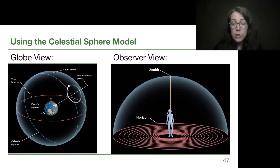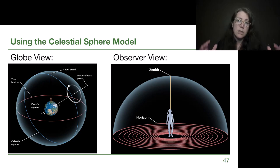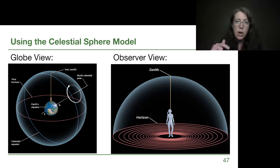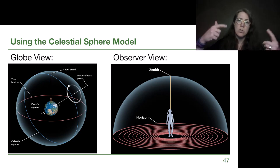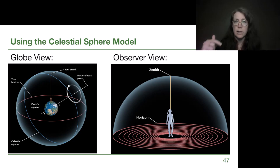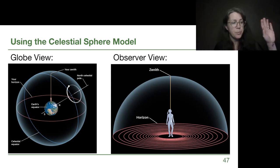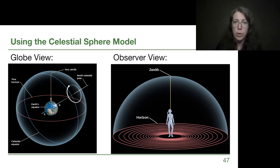In our discussion of the celestial sphere model we are going to be seeing two different views. Both of them are part of this overall model where we're imagining that the stars are all projected onto this sphere that surrounds the Earth, and that instead of the Earth turning on its axis — which we know is what is actually happening — since we don't feel like we're moving, we imagine that the stars are moving through our sky instead. It's a valid way to talk about our true perspective where things rise into view above our horizon and set out of view away from our horizon.